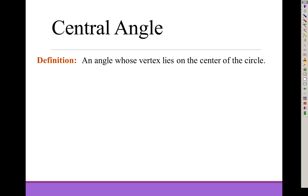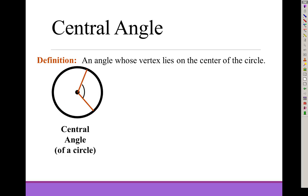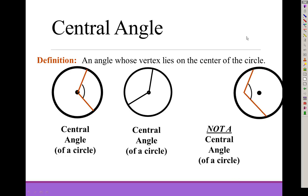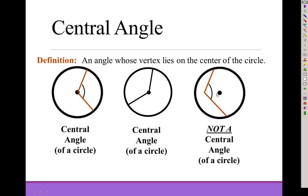A central angle has to have a vertex on the center of the circle. Here's a central angle — vertex at the center. There's another central angle — vertex at the center. This one is not a central angle: if this is the center of the circle and the vertex is elsewhere, it's not a central angle, so we can't use the arc-equals-angle relationship.